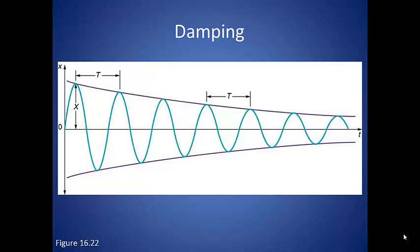Damping opposes and therefore slows the back and forth motion. If a large amount of damping occurs, then the system doesn't even oscillate, it just moves toward equilibrium.